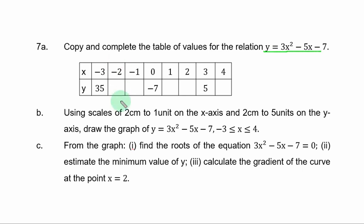B. Using scales of 2cm to 1 unit on the s axis and 2cm to 5 units on the y axis, draw the graph of y equal to 3s squared minus 5s minus 7 over the range of values of s.